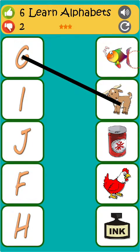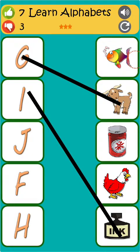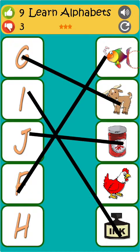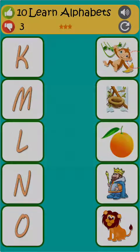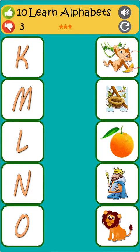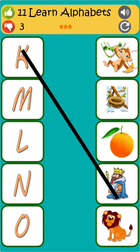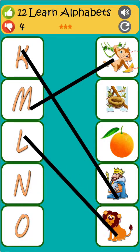G is for goat. I is for ink. J is for jam. F is for fish. H is for hen. K is for king. M is for monkey. L is for lion.